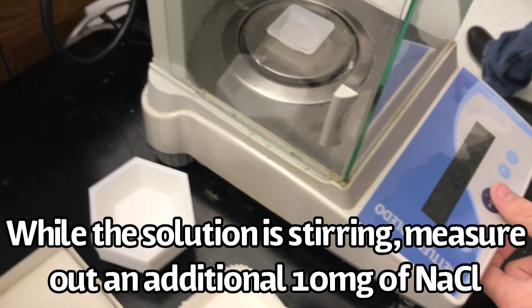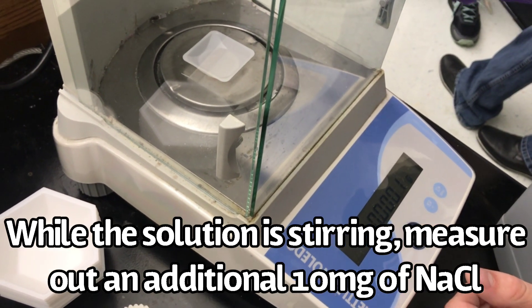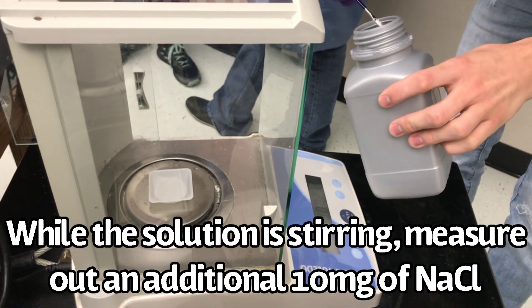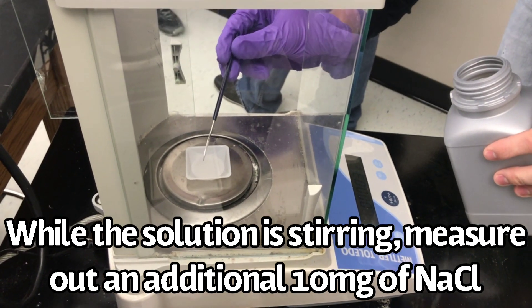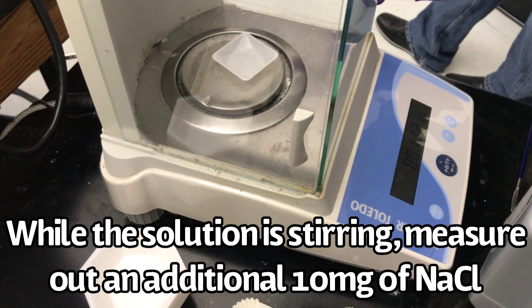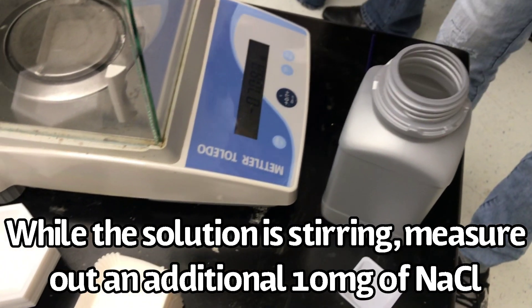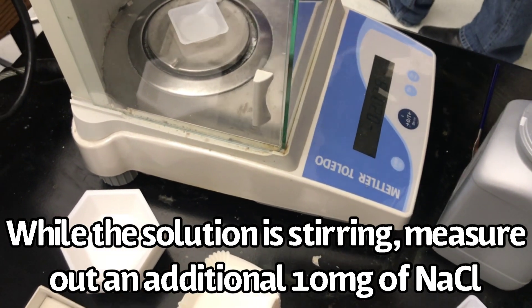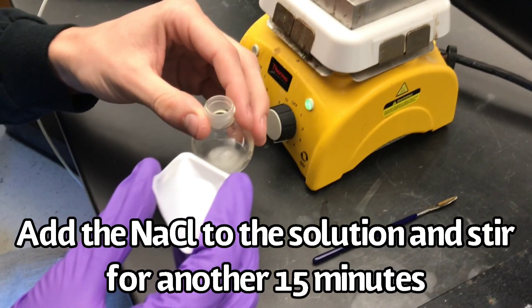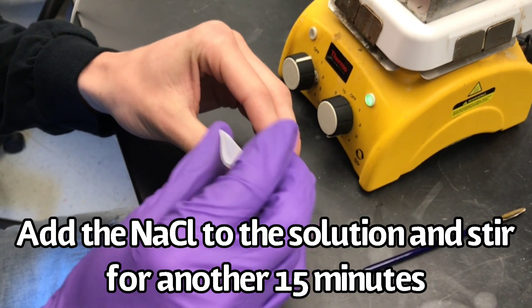While your solution is stirring, measure out an additional 10 milligrams of sodium chloride. After the 45 minutes are up, add the sodium chloride to the solution and stir for an additional 15 minutes.